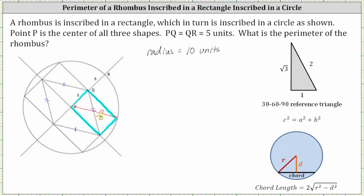This is all the information we need to determine the perimeter of the rhombus. We know each side of the rhombus has a length of 10 units. Therefore, the perimeter of the rhombus is equal to four times 10, or 40 units.